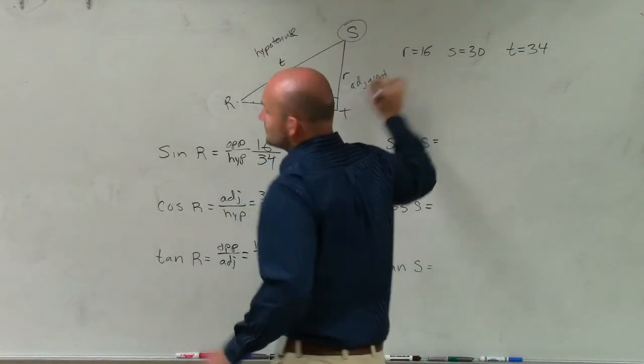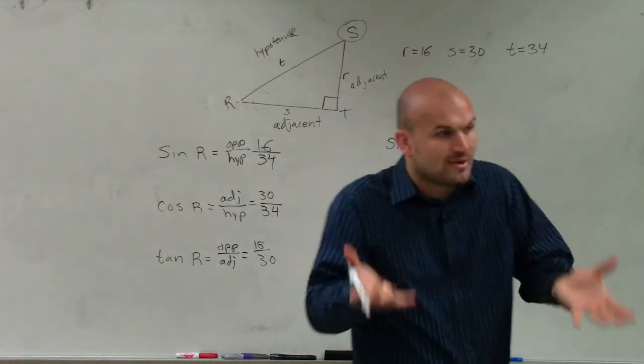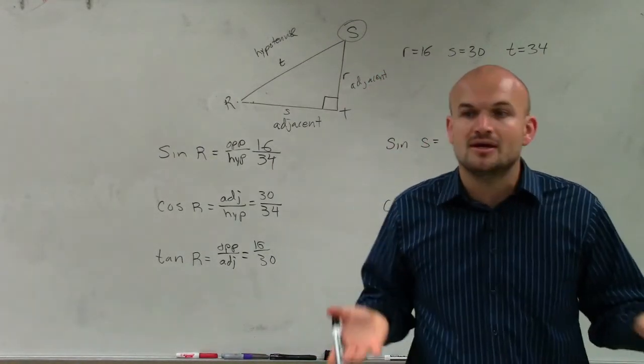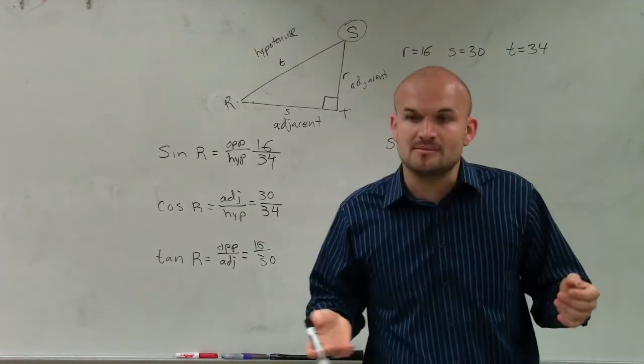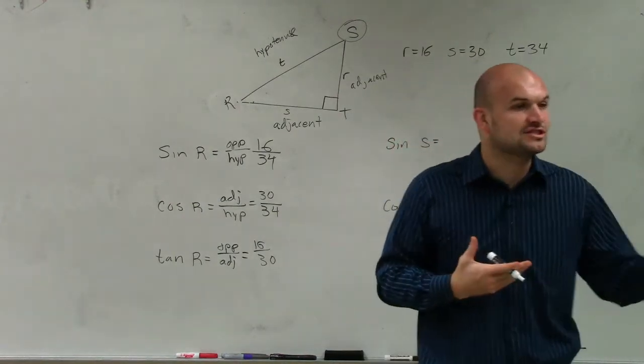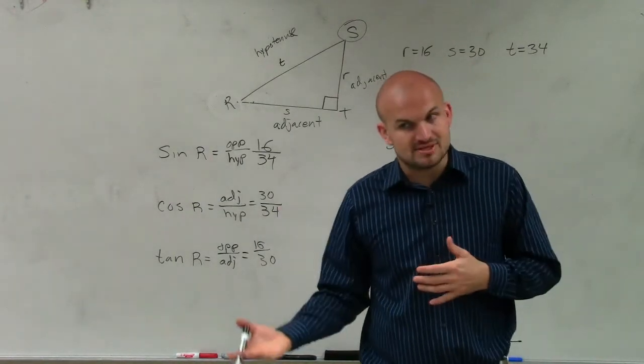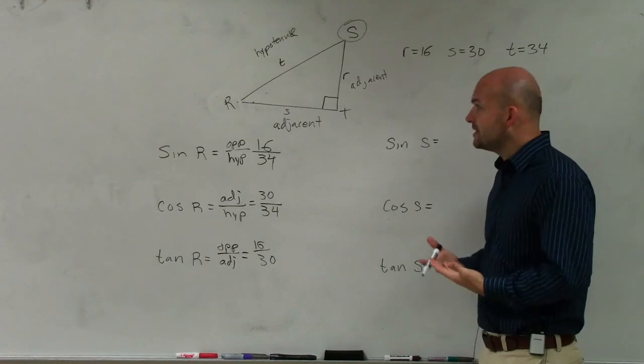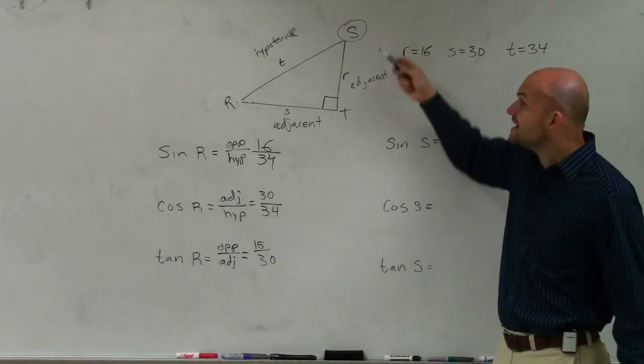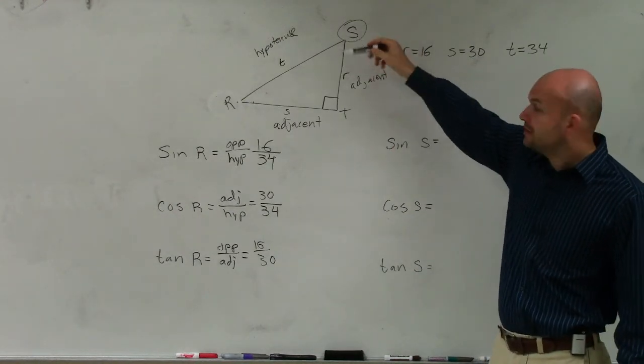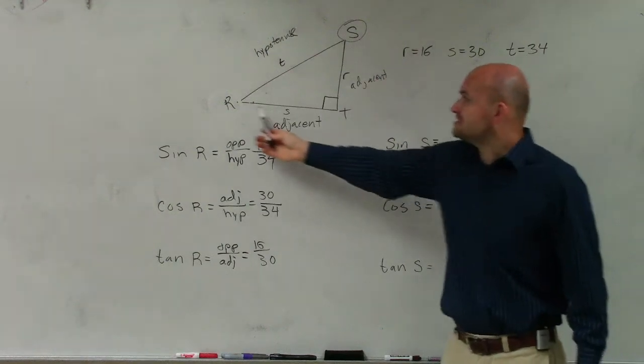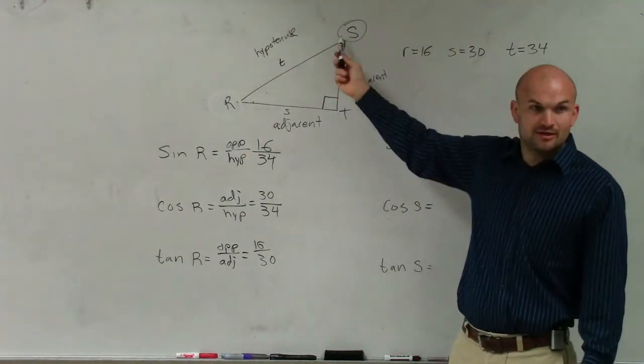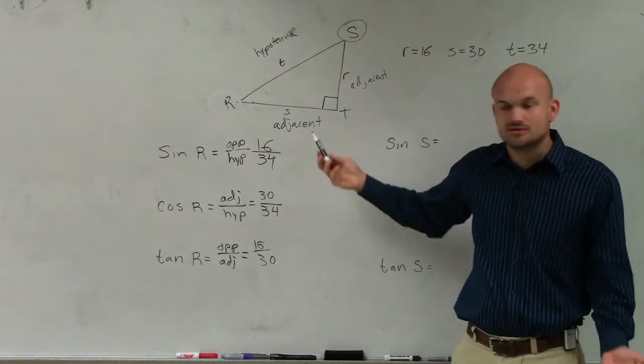So guys, the hypotenuse is fixed. It's always going to be across from the 90-degree angle. But what's difficult about these problems is determining which side is adjacent and which side is opposite. And again, I'll just reiterate, the adjacent side connects your angle and your right angle. This side length has no connection to my angle, right? It's not even touching the angle, so it's opposite.